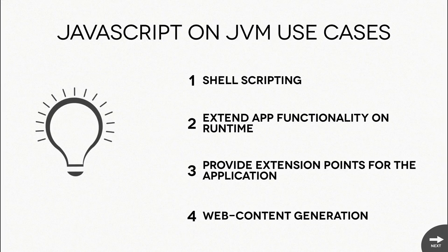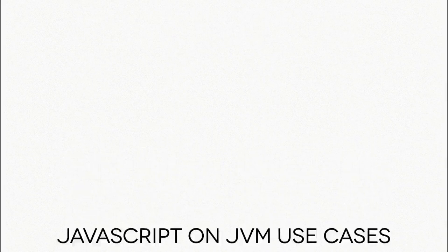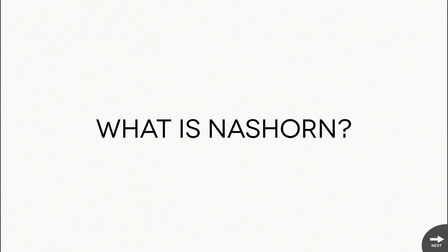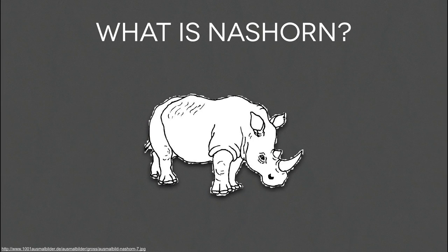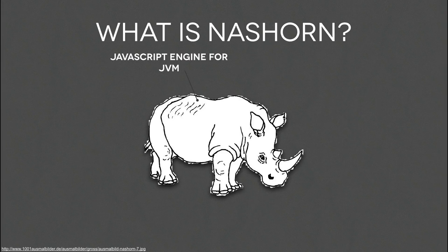JavaScript can also be used for backend generation, which I'll demonstrate later. Let's talk briefly about what Nashorn is - it's pronounced 'Nashorn' because it's the German word for rhinoceros. First of all, it's a new JavaScript engine - and I want to make a point: this is just a JavaScript engine. It's not a framework, it's not a Node.js substitution - it's just an interpreter that can execute your JavaScript.